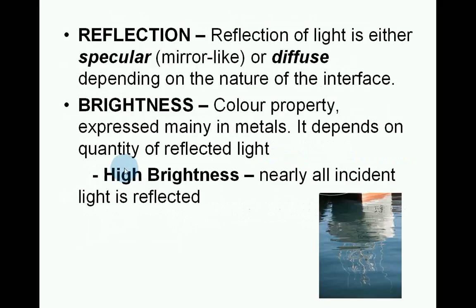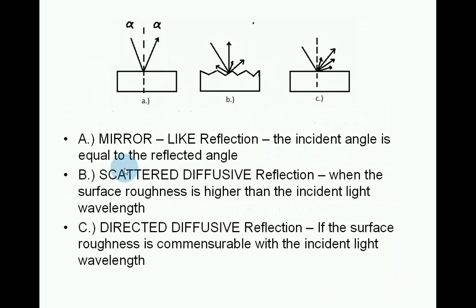Reflection of light is either specular, mirror-like, or diffused, depending on the nature of the interface. Brightness is a colour property expressed mainly in metals; it depends on the quantity of reflected light. With high brightness, nearly all the incident light is reflected. Picture A shows mirror-like reflection, where the incident angle equals the reflected angle. B shows scattered diffusive reflection when the surface roughness is higher than the incident light wavelength. Picture C shows directed diffusive reflection when the surface roughness is commensurable with the incident light wavelength.